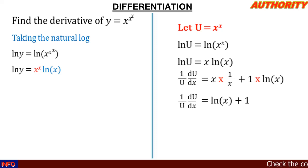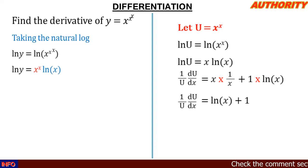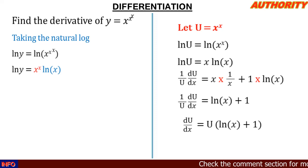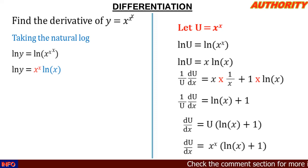Now let's clear the 1/u by multiplying both sides by u. So du/dx = u·(ln(x) + 1). Since u = x^x, we substitute back: du/dx = x^x·(ln(x) + 1).